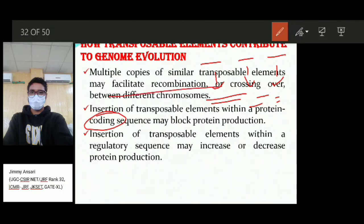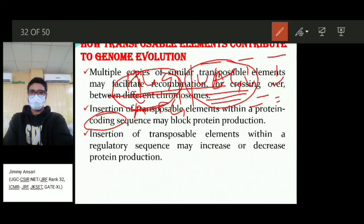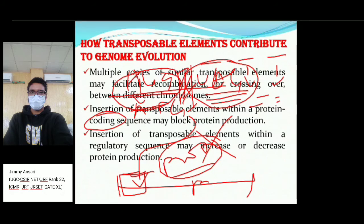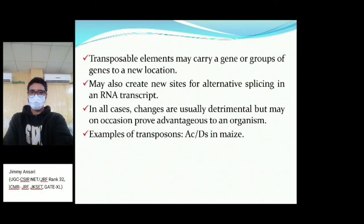For example, if there is a sequence with an initiating codon (AUG) and a stop codon (UAG), a transposable element can insert within this open reading frame and block protein synthesis. Insertion of a transposable element within a regulatory sequence may increase or decrease protein production. During protein synthesis, regulatory sequences such as promoters and enhancers control gene expression. If the transposable element inserts into the promoter, protein production will decrease; if it inserts into the enhancer, it will similarly affect gene expression. Transposable elements may also carry a gene or group of genes to a new location.